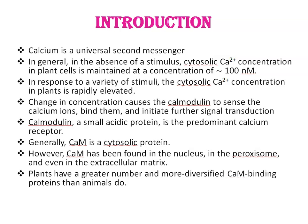This change in concentration causes calmodulin to sense the calcium ions, then bind them, and initiate further signal transduction. So, what is calmodulin? Calmodulin is a small acidic protein present in all eukaryotes. It is the predominant calcium receptor and one of the best characterized calcium sensors in eukaryotes.